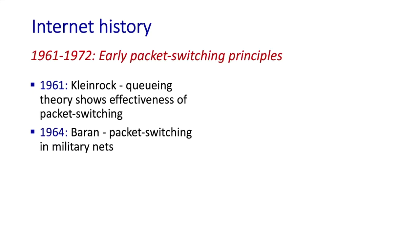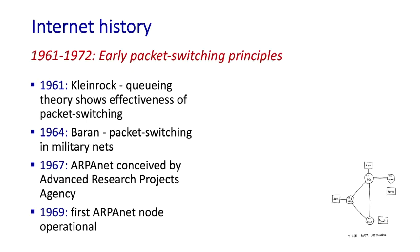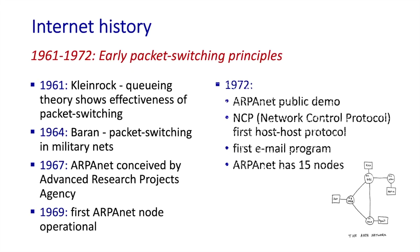It's pretty amazing that these three research groups around the world, each unaware of each other's work at the time, were to become the inventors of packet switching. In 1967, the Advanced Research Projects Agency, also known as ARPA, published a plan for a network known as ARPANET, which would become the world's first packet-switched computer network and the oldest direct ancestor of what we know today as the internet.